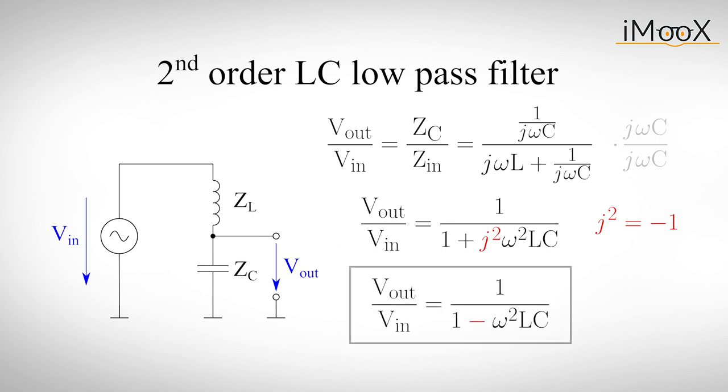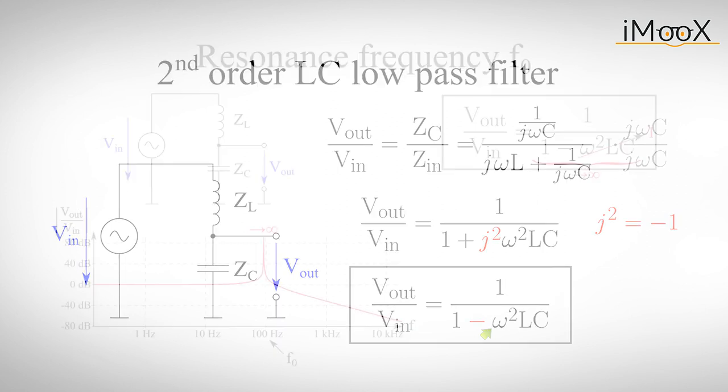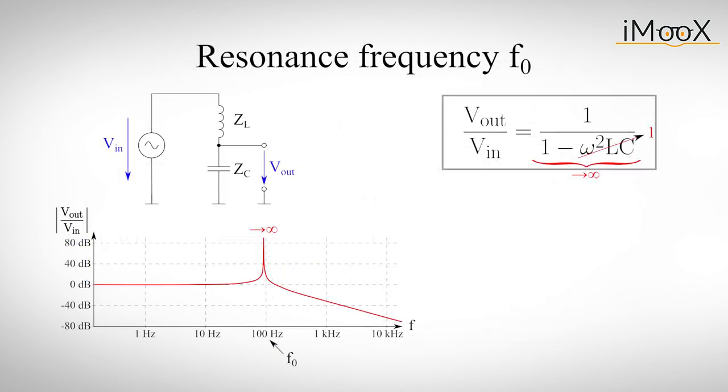This equation is very interesting for two reasons. First, we can see that this term gets rapidly smaller for higher frequencies, since omega in the denominator is squared. Secondly, we notice that this expression can approach infinity if omega squared times LC becomes one. This will happen at one particular frequency. We can calculate this so-called resonance frequency.